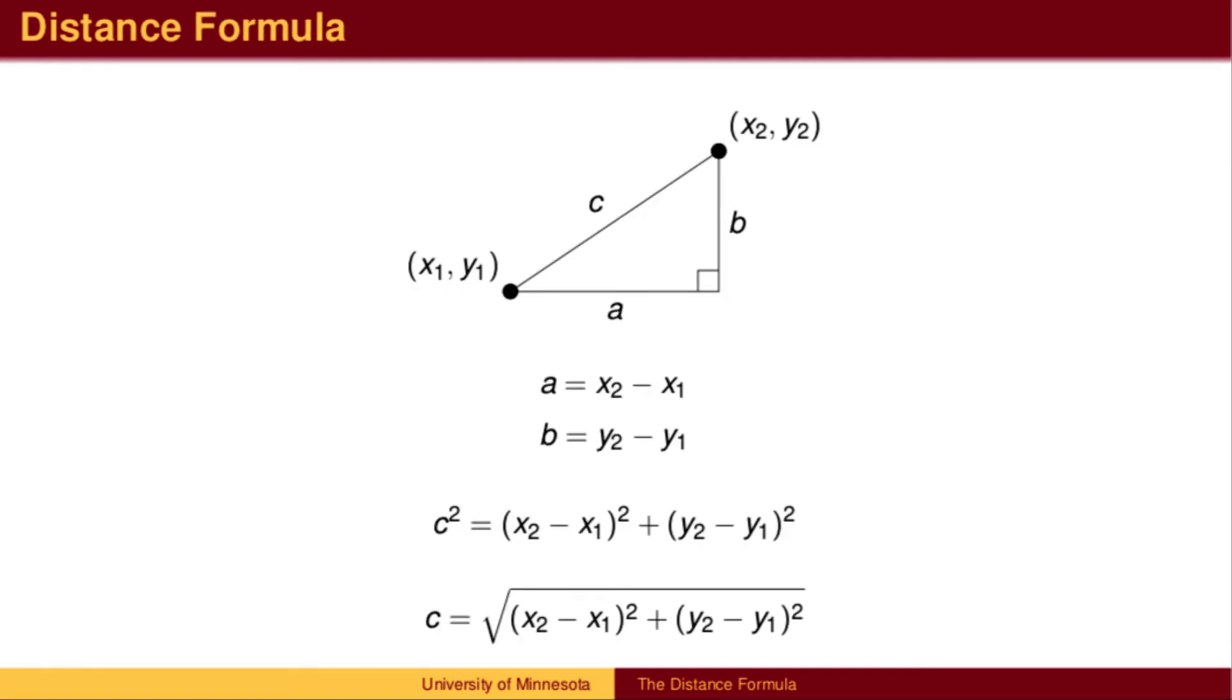In general, to find the length of the hypotenuse, the distance between two points, subtract x-coordinates to calculate A, subtract y-coordinates to calculate B. Use the Pythagorean Theorem to find C, taking a square root to simplify.